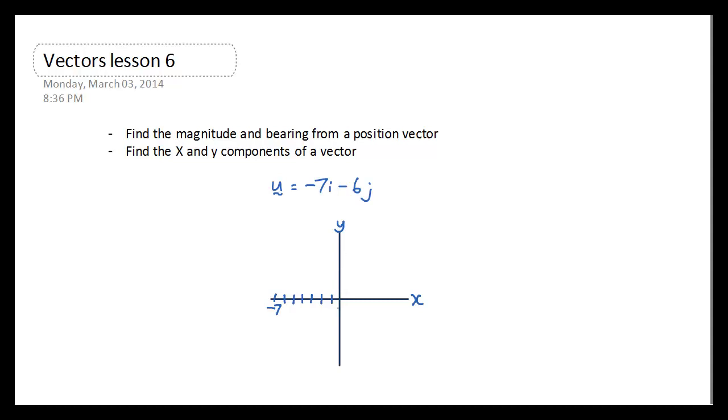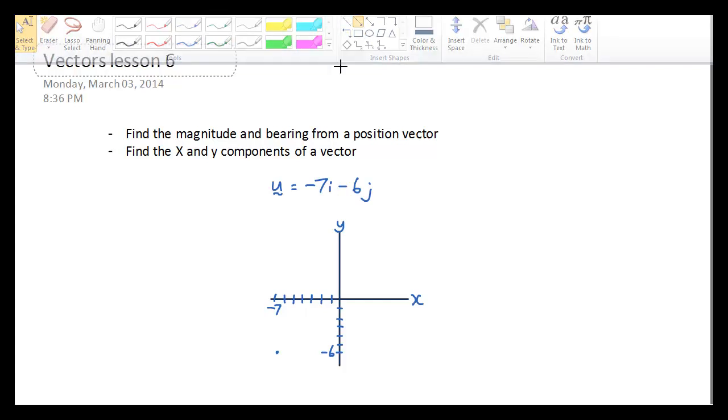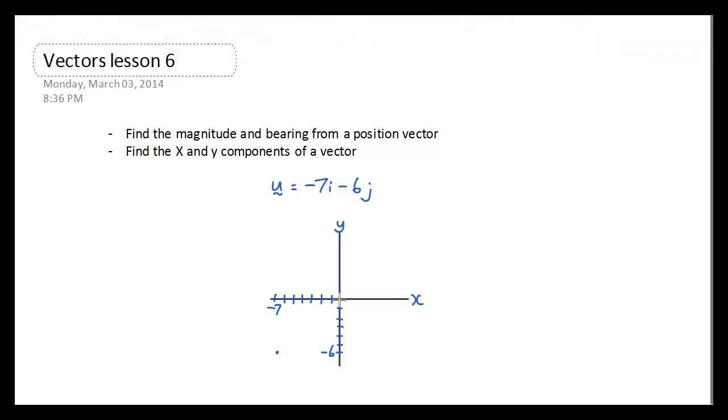And then down 6 on the y-axis. I draw a point here and then I draw an arrow from the origin to this point. So this is my vector u.